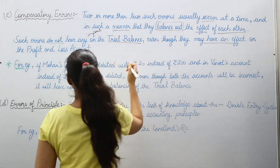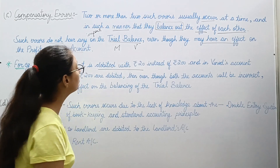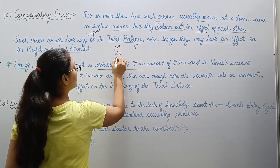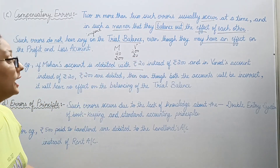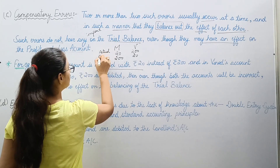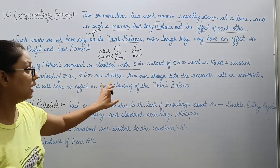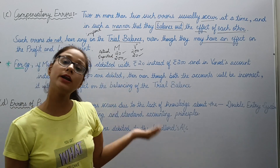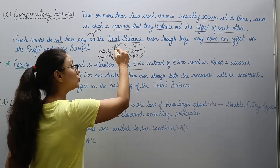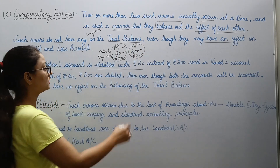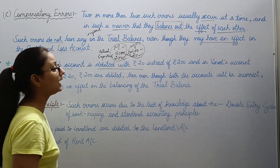Let's take an example with two persons — Mohan and Vinod. Mohan's account: you debited it with rupees 20, although it should have been 200. And Vinod's account: you put 200, although it should have been 20. Ultimately in the total amounts, the overall value is not heavily impacted — total on both sides is 220. So the error happened in both places, but the effects of both errors compensated each other — these are called compensatory errors.